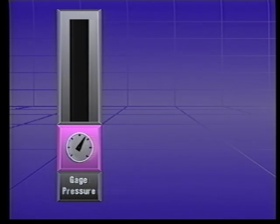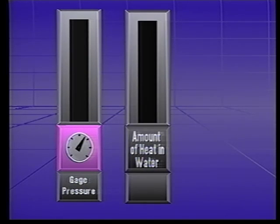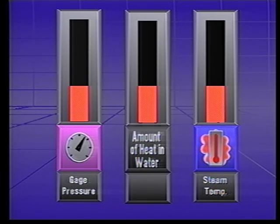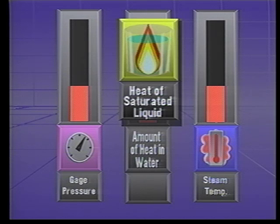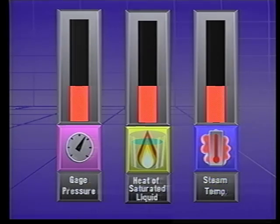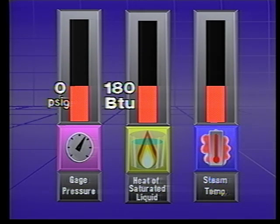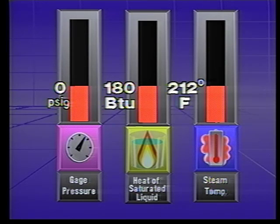At any pressure, it takes a specific amount of sensible heat to raise the temperature of the water from 32 degrees Fahrenheit to the boiling temperature. This is called the heat of the saturated liquid. At standard pressure, the heat of the saturated liquid of water is about 180 BTUs per pound, and the boiling temperature is 212 degrees Fahrenheit.